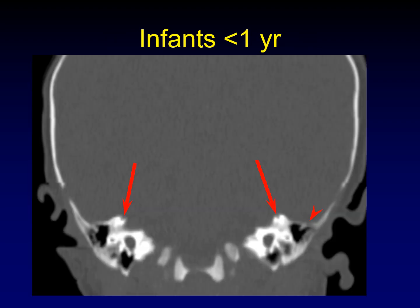Here's what I was talking about in infants less than one year old. There are apparent gaps in the tegman mastoidium, and look at the superior semicircular canals — you would call that superior semicircular canal dehiscence in an adult. But this is a child less than one year old, and we know it takes about a year for the temporal bone to fully ossify. These are all perfectly normal.